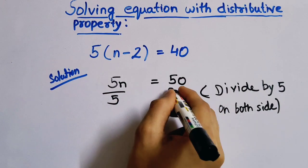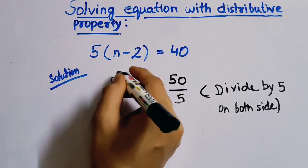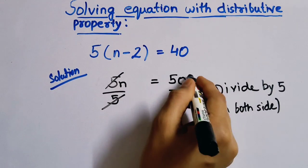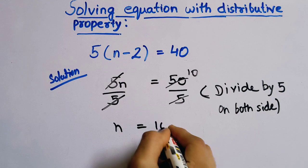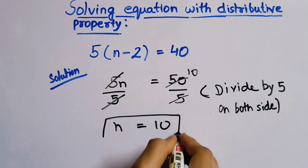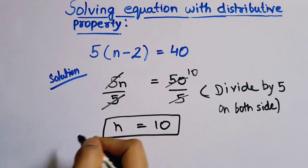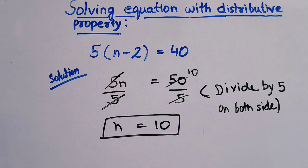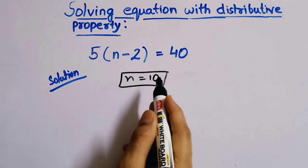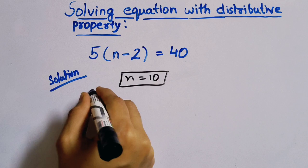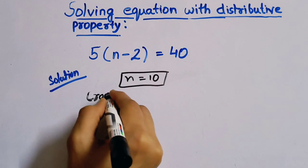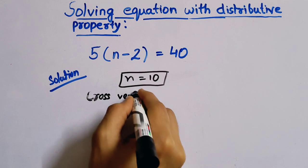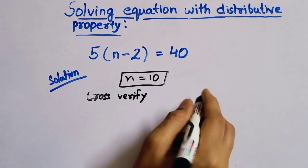So here 5 will get cancelled with 5, so we have n equals to 10. This is our answer, we have n equals to 10. So always try to cross verify, so we will cross verify the equation.